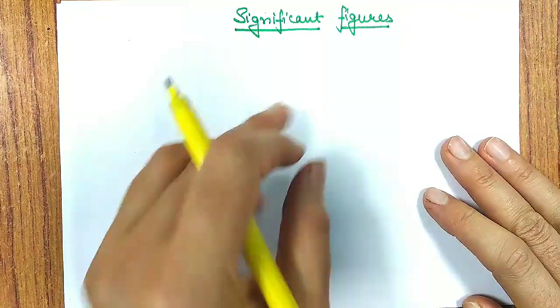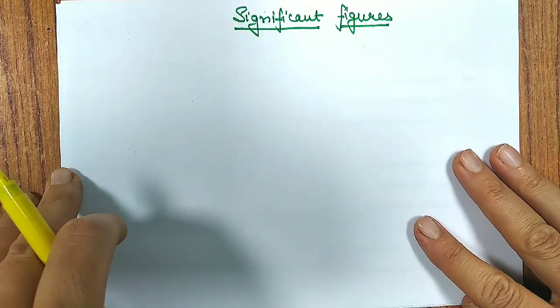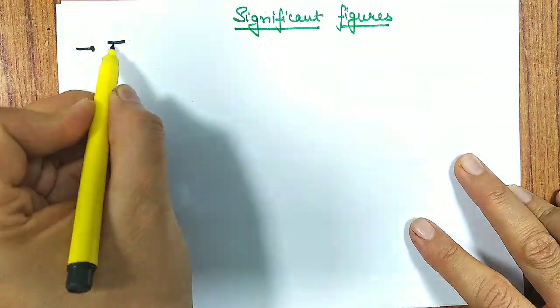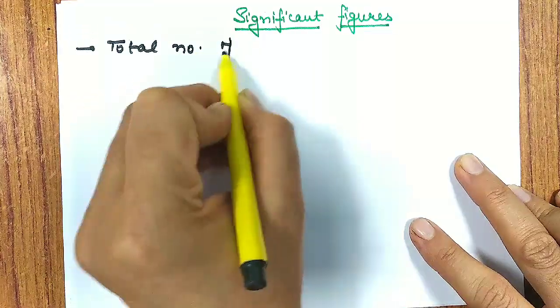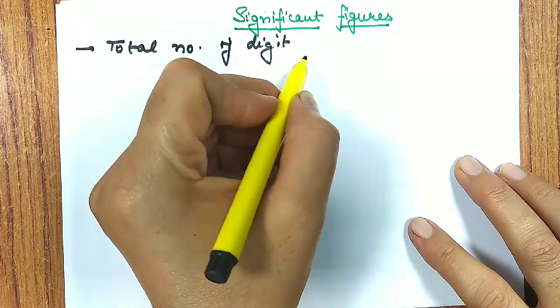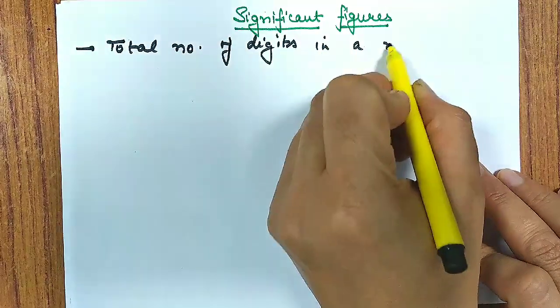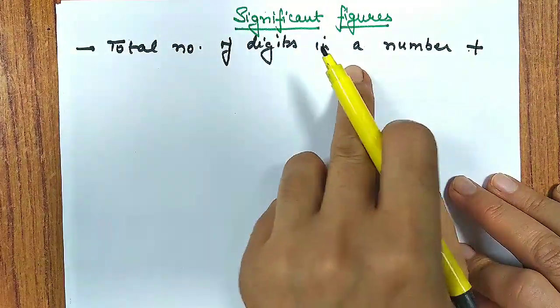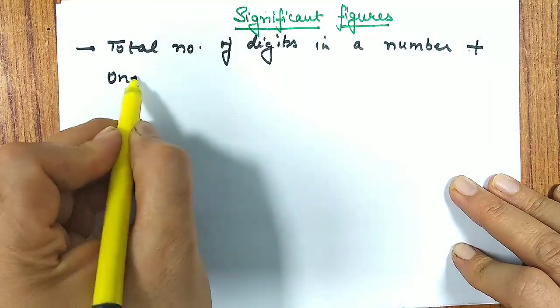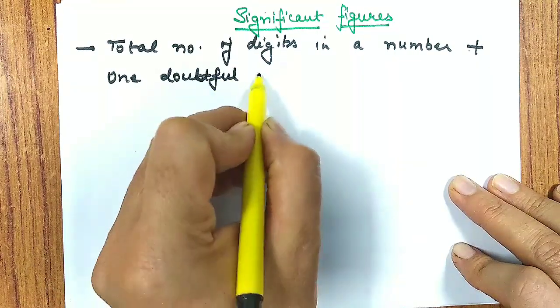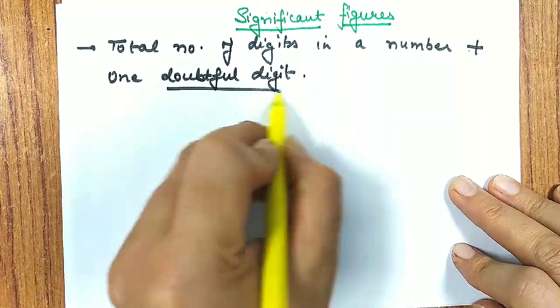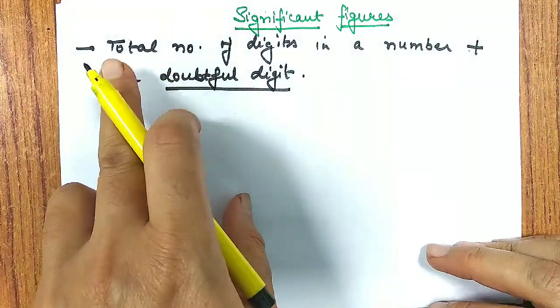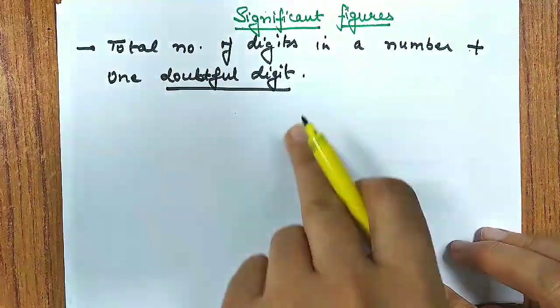In the previous video I explained accuracy and precision, and now we will talk about significant figures. Generally during calculation we require and will be having number of questions based on significant figures. In your competitors you will also be having some integer type questions on significant figures.